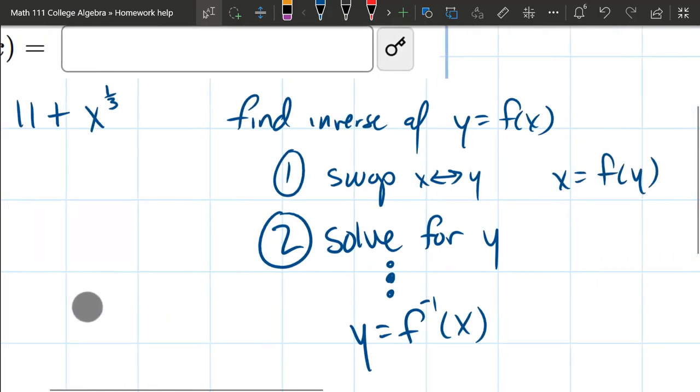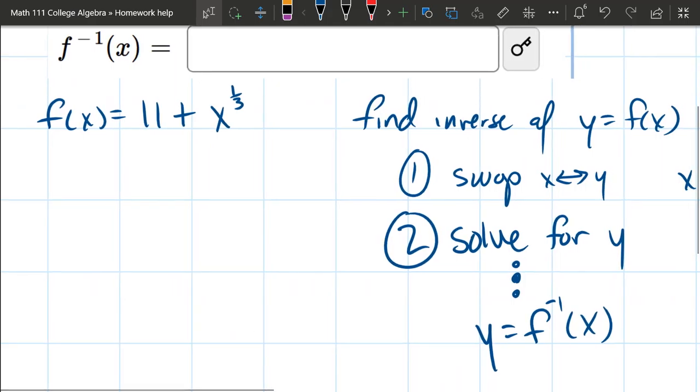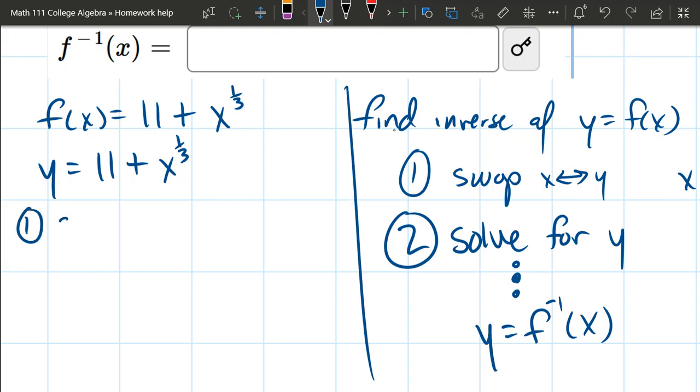First thing you should worry about, well, there's no y. Well, that's not a problem. F of x equals y. So we got y equals 11 plus x to the one-third. All right, so at least now I have a y, so I can swap. So we're gonna apply step one, swap x and y.